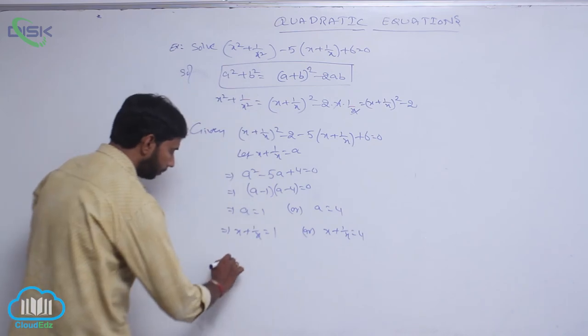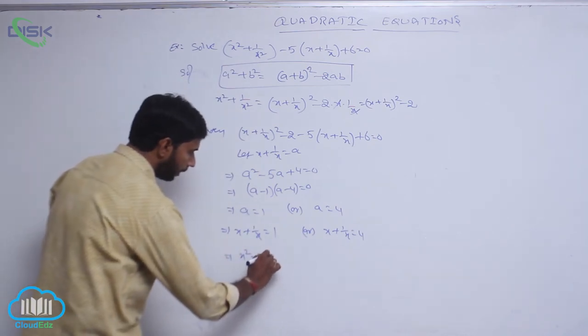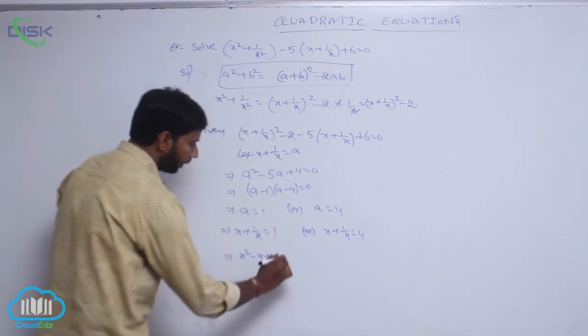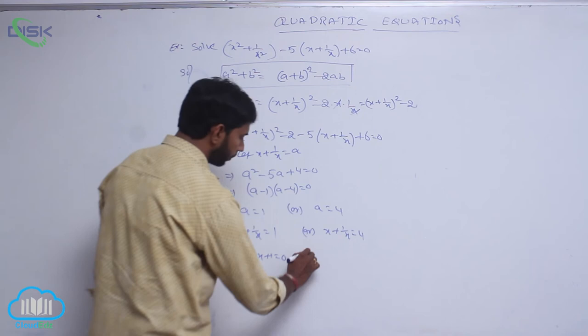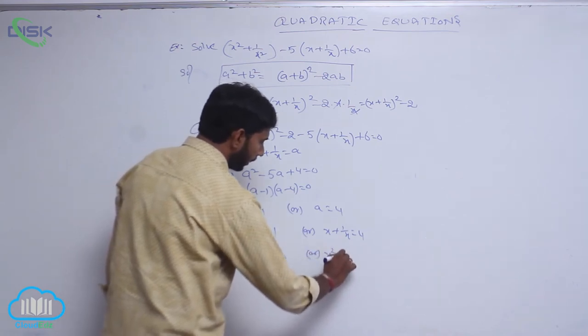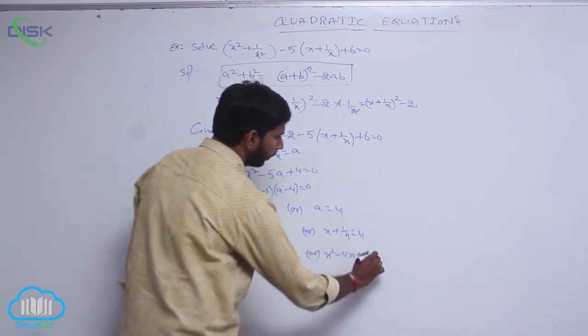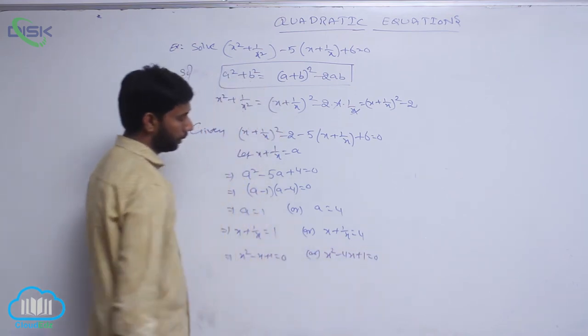Taking LCM, the first gives x squared minus x plus 1 equal to 0, and the second gives x squared minus 4x plus 1 equal to 0.